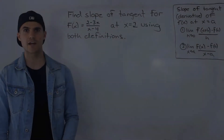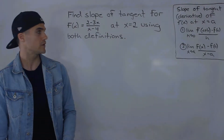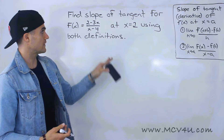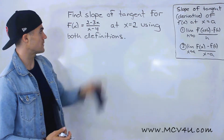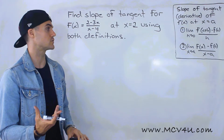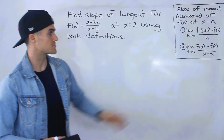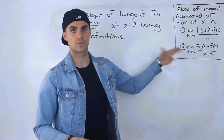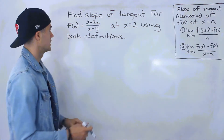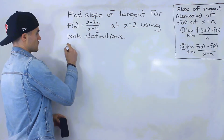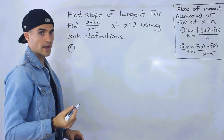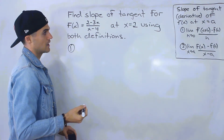Welcome back, Patrick here. Moving on to the next question — we need to find the slope of the tangent for the function (2 minus 3x) over (x minus 4) at x equals 2, using both definitions like we've been doing in the previous examples. This rational function is going to involve a lot of algebra, just as a heads up.